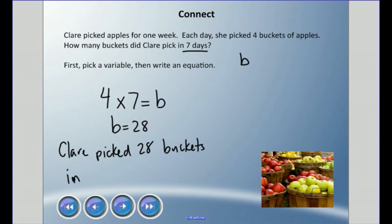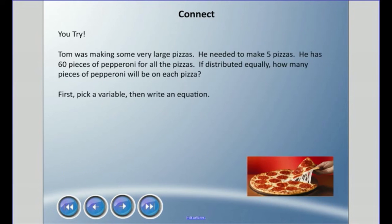I'm gonna get you to try this one. Tom was making some very large pizzas. He needed to make five pizzas. He has 60 pieces of pepperoni for all the pizzas. If he distributes that pepperoni equally, that means he's gonna put the same number of pepperoni pieces on each pizza. How many pieces of pepperoni will be on each pizza? First, pick a variable and then write an equation.